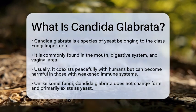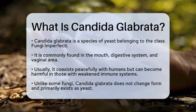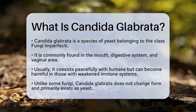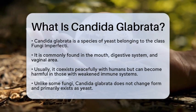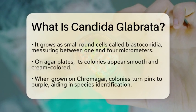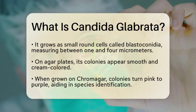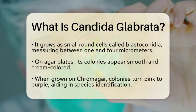Candida glabrata is unique because it does not change its form like some other fungi. It primarily exists as a yeast and does not form the branching structures known as pseudohyphae. Instead, it grows as small round cells called blastoconidia, which are typically between one and four micrometers in size. This size is quite small, making it difficult to see without a microscope.